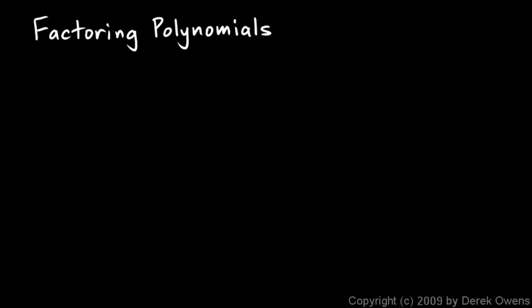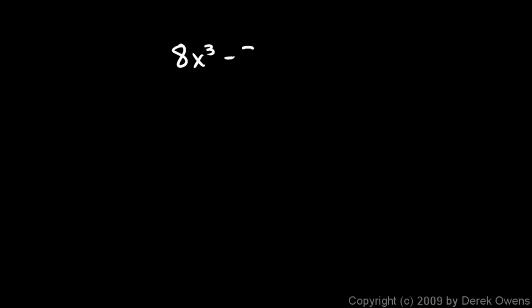We're back and we're still talking about factoring polynomials, just working through some examples that show the thought process of factoring out a common factor from each of the terms. Here's our next example: 8x cubed minus 3x squared. The 8 and the 3 don't have any common factors, but this term has an x squared in it and I see an x squared right here.